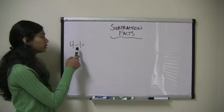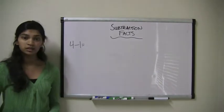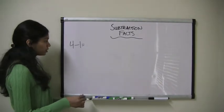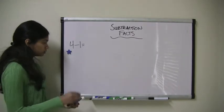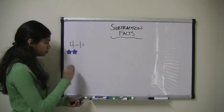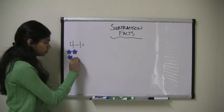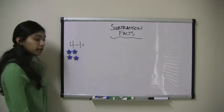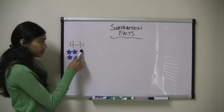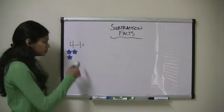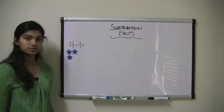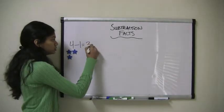Let's say we had 4 minus 1. So let's say I had 4 stars: 1, 2, 3, 4. And I want to take away 1. 4 take away 1. So I take 1 away. Now I have 1, 2, 3 stars left. So 4 minus 1 equals 3.